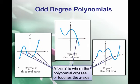Keep in mind with odd degree polynomials that our domain and our range will be negative infinity to positive infinity. Where our blue functions cross the x-axis, we can refer to these as zeros, solutions, and x-intercepts. I can use all those words interchangeably.